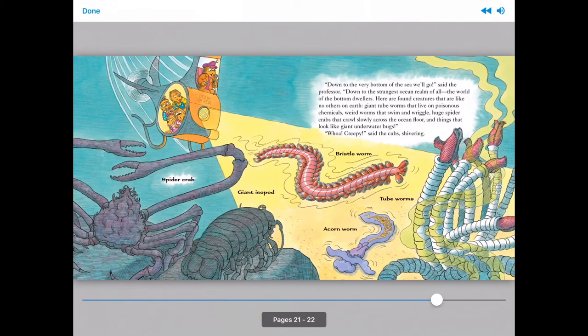Down to the very bottom of the sea we'll go, said the professor. Down to the strangest ocean realm of all. The world of the bottom dwellers. Here are found creatures that are like no others on earth. Giant tube worms that live on poisonous chemicals. Weird worms that swim and wriggle. Huge spider crabs that crawl slowly across the ocean floor. And things that look like giant underwater bugs. Whoa, creepy, said the cubs, shivering.